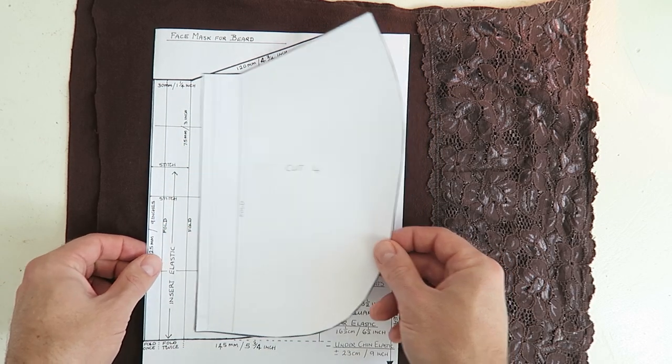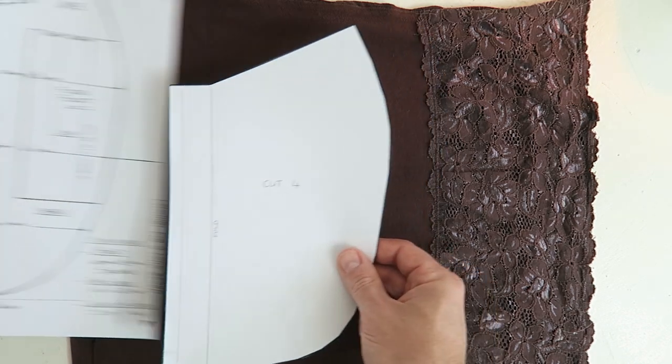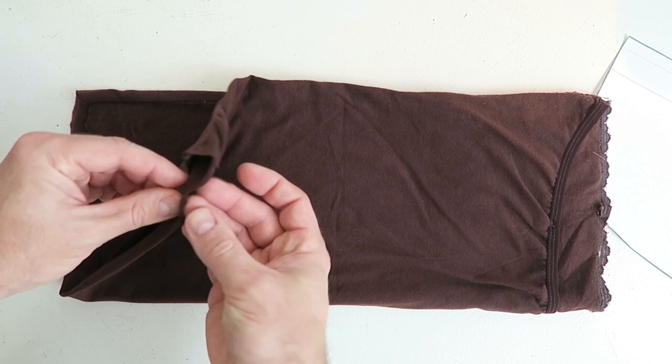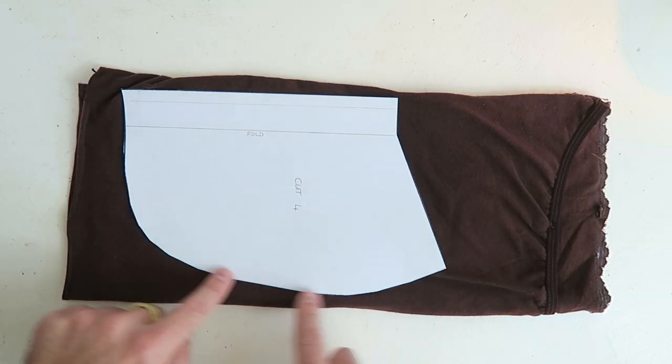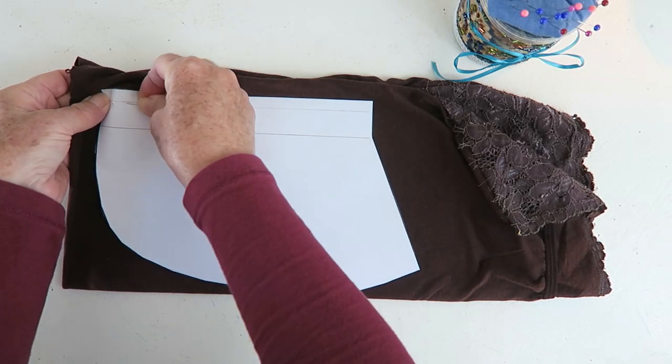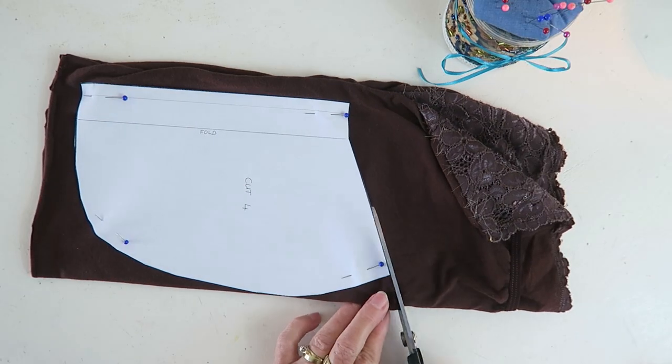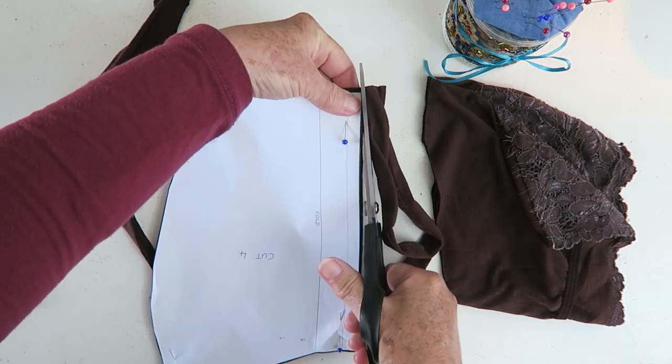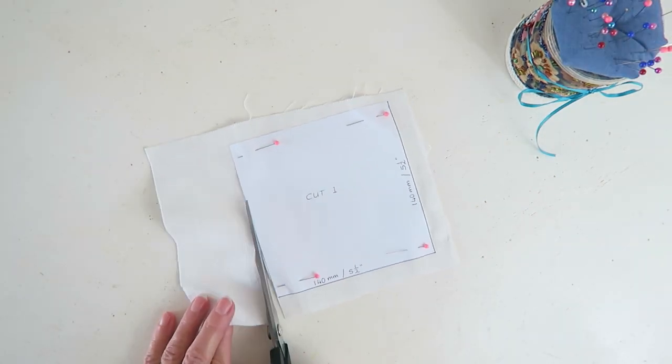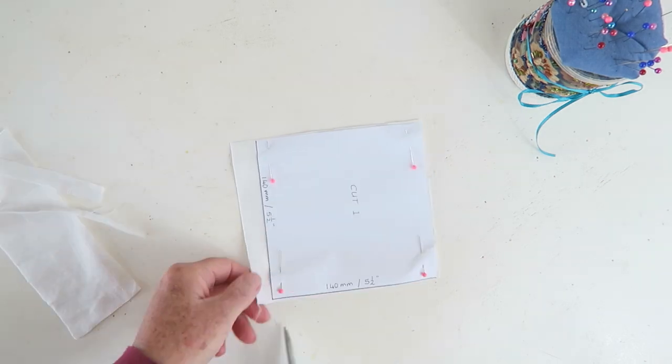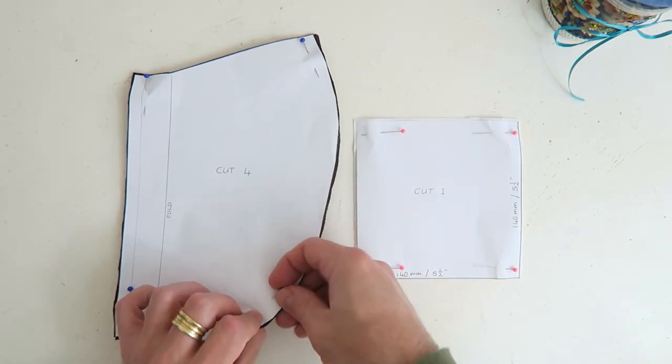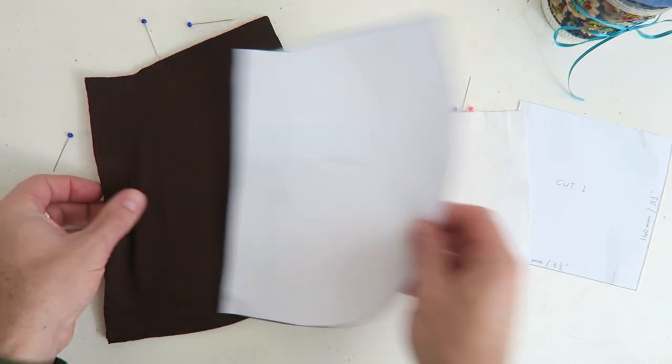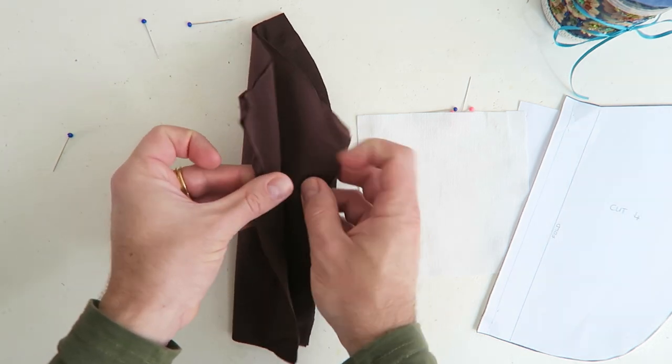Now what we're doing is we're cutting out four of these shapes. You'll see that it is made to scale. Here I'm just folding the fabric in half so that there are four pieces. Now I pin the pattern to the fabric. You then cut the fabric around the pattern. Now using the same fabric or different fabric, you will cut out your filter pouch. It's basically a square pattern. Here I've cut the pattern out and now you are left with four pieces.